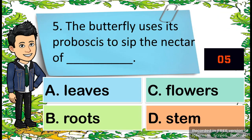Number five: the butterfly uses its proboscis to sip the nectar of the blank. A, lips. B, roots. C, flower. D, stem.